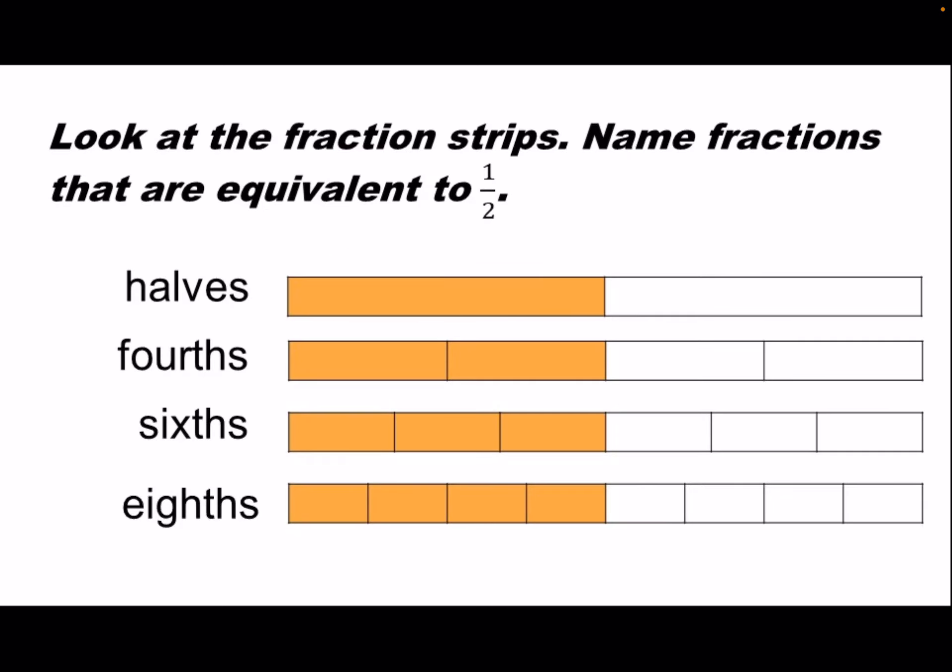Look at the fraction strips. Name fractions that are equivalent to one-half. Answer: Fractions that are equivalent to one-half are two-fourths, three-sixths, and four-eighths.